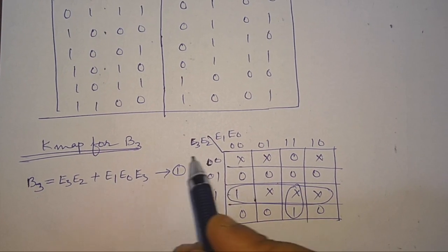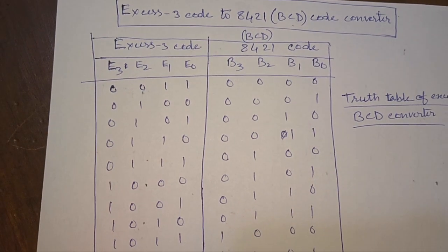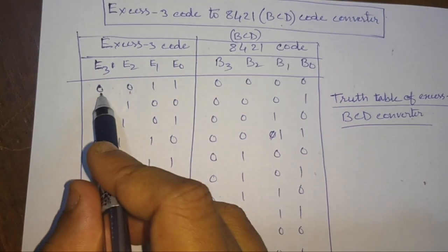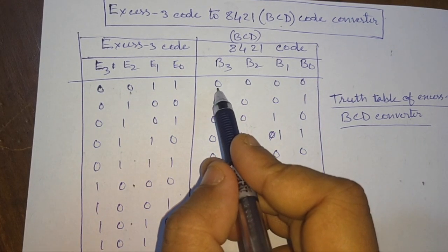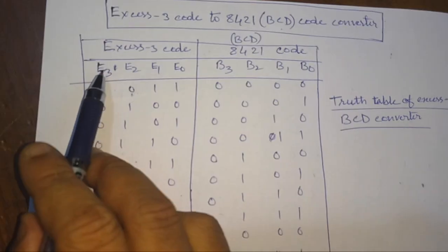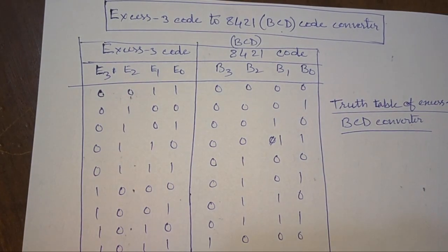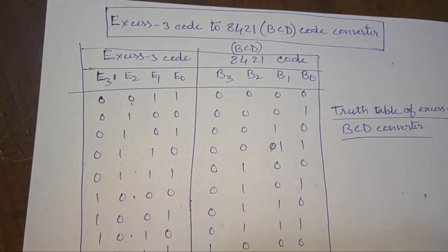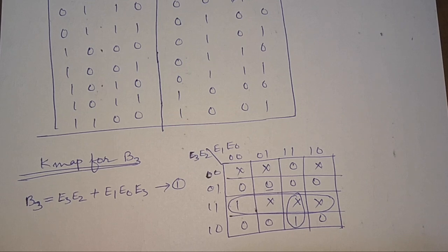This is the K-map for B3. To fill in the B3 values, we have to check the XS3 code. We put the B3 value 0 whenever E3 and E2 are 00 and E1 and E0 are 00, and also when E3 and E2 are 00 and E1 and E0 are 11. In this way we fill all B3 values into the K-map.